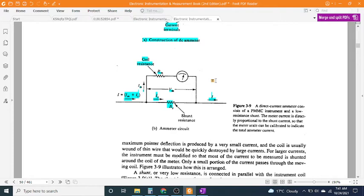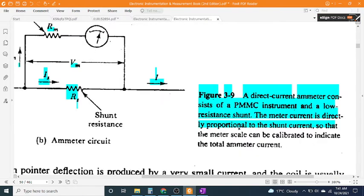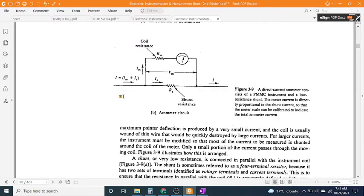A direct current ammeter consists of a PMMC instrument and a low shunt resistance. The meter current is directly proportional to the shunt current, so that the meter scale can be calibrated to indicate the total ammeter current.